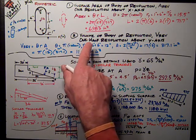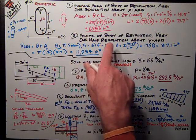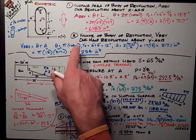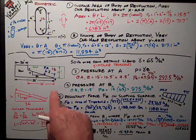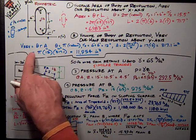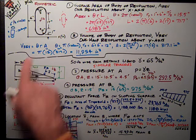Part number two was determine the volume of body of revolution, V_rev, for one half revolution about the Y axis. With V_rev, the formula is very similar. I've got theta r A in this case.